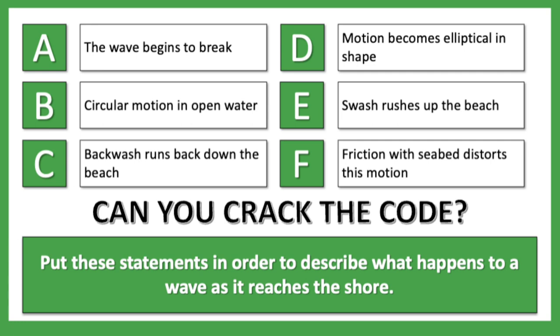We have: the wave begins to break; circular motion in open water; backwash runs back down the beach; motion becomes elliptical in shape; the swash runs up the beach; and friction with seabed distorts motion. We're going to give you a moment to decide what order you think they should go in. You may wish to pause the video to give yourself a little bit more time, and you might want a pen and paper to note down the order of the letters.